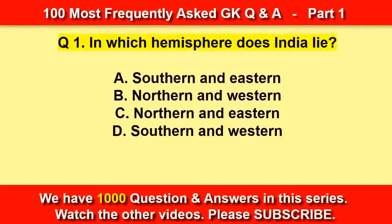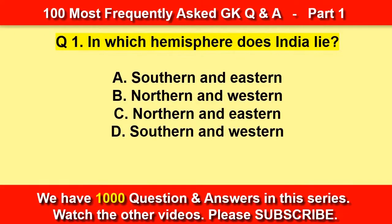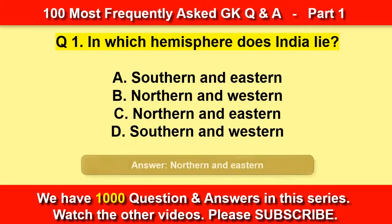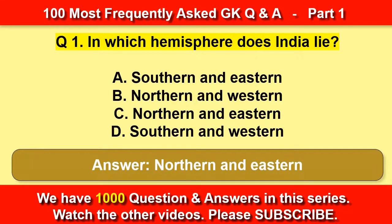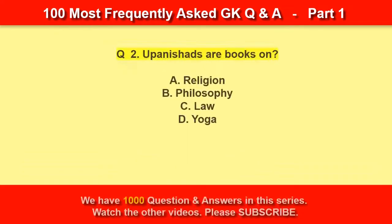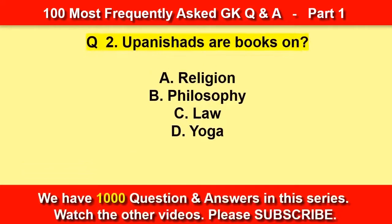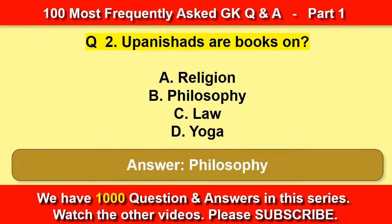In which hemisphere does India lie? Northern and Eastern. Upanishads are books on — Philosophy.